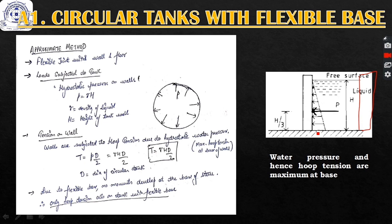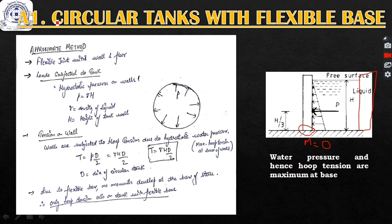A flexible joint means little movement or rotation is allowed. If this part is flexible, there will be no resistance to displacements or rotations, hence there will be no resisting moments or forces, and the moment at this point will be zero. This is the major difference between the rigid base and flexible base tank.